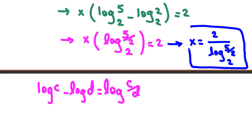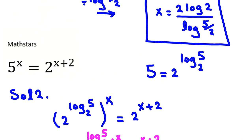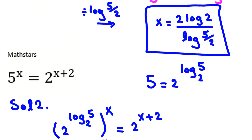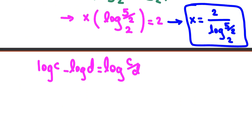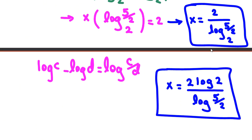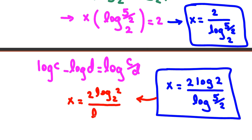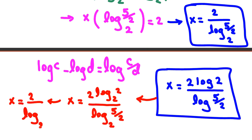Now let's verify both answers are the same. In Solution 1, we had x equals 2 log 2 over log(5/2). If we use base 2 in Solution 1's formula, the numerator 2 log 2 becomes 2 times log base 2 of 2, which equals 2 times 1 equals 2. So Solution 1 gives x equals 2 over log base 2 of (5/2), which is exactly the same as Solution 2. Both solutions match.